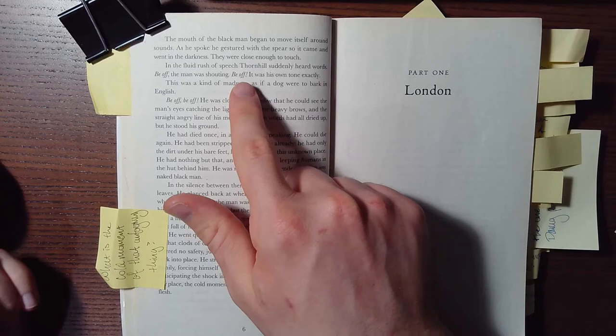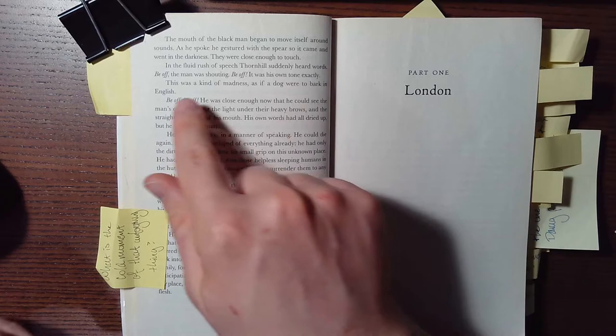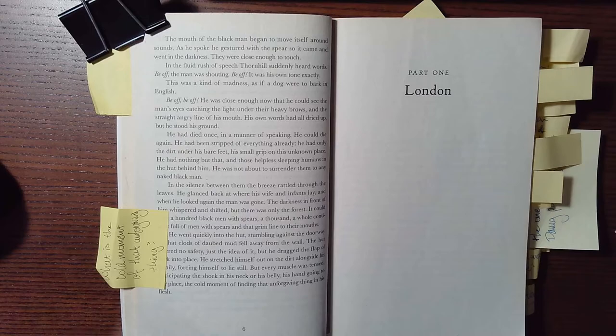And Grenville even writes it as such. Be off, the men were shouting, be off, echoing Thornhill's words. It was his own tone, exactly. This was kind of madness, as if a dog were to bark in English. So it's othering, straight away, the Aboriginal people.